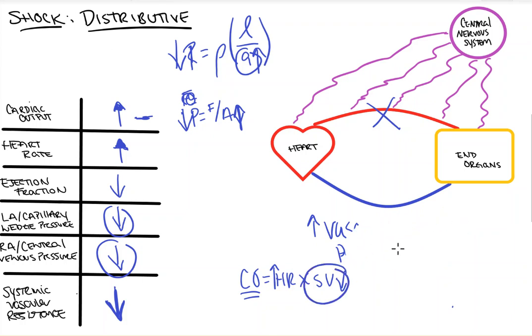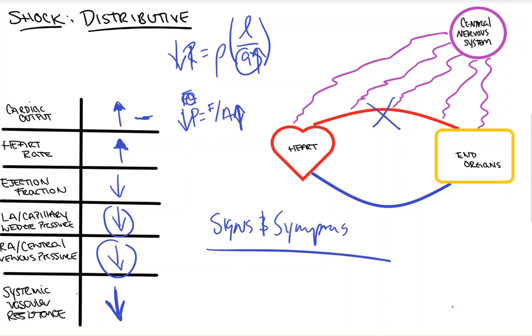So we need to briefly take a look at the signs and symptoms that will differentiate this kind of shock from other kinds of shock. And these patients are actually going to be warm and sometimes flushed, and this is because the blood vessels supplying the skin also massively dilate leading to flushing and warming.